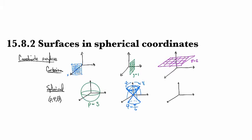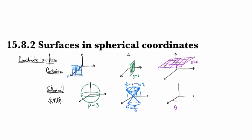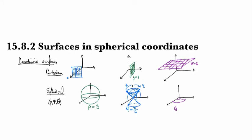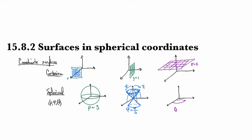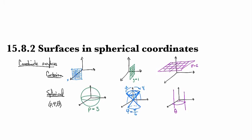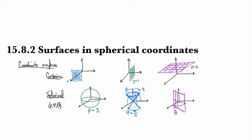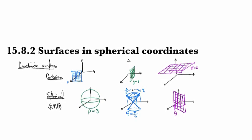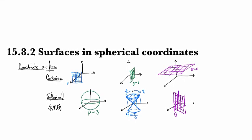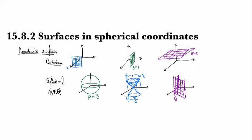And then what is the coordinate surface for theta? Theta is how far you are rotated around the z-axis starting from the positive x. The collection of all points that are rotated this far is going to look the same as it did for cylindrical coordinates. It's going to be this plane right here, tilted but contains the vertical axis. So that's a fixed value of theta.